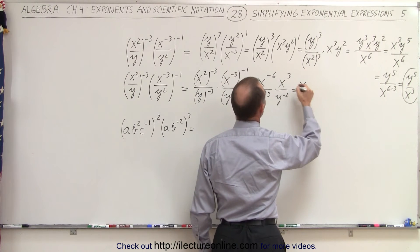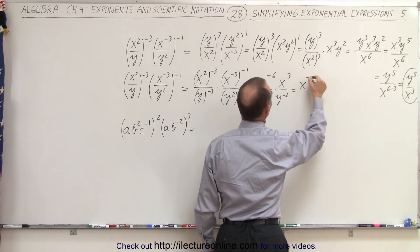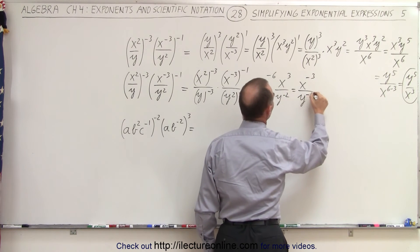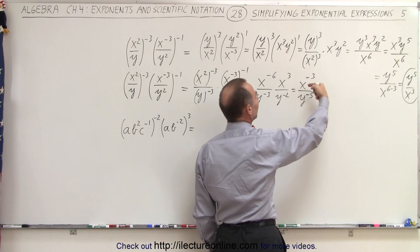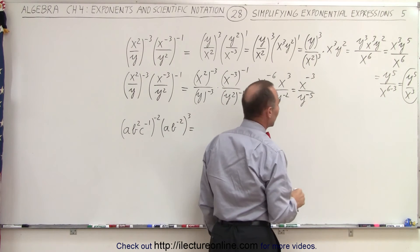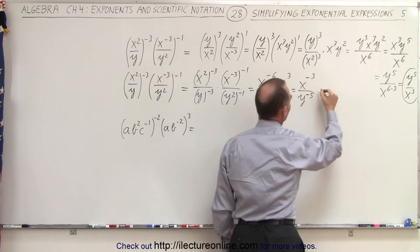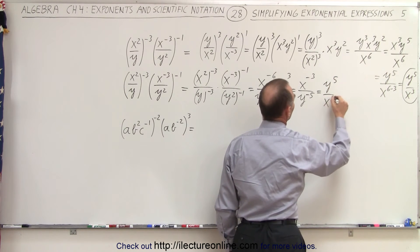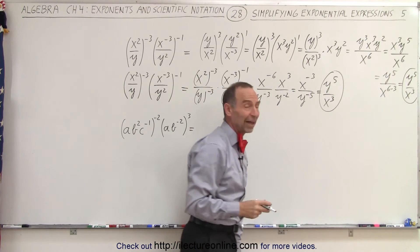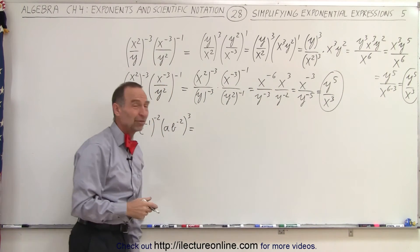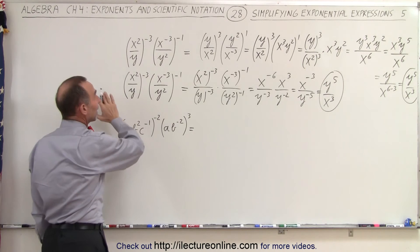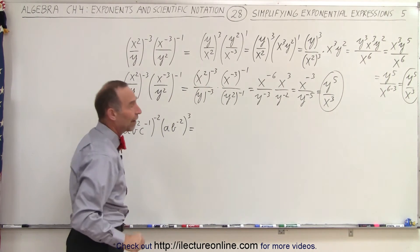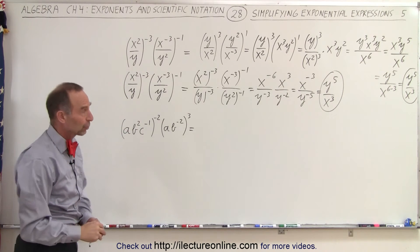So in the numerator, this becomes x to the minus 6 plus 3, which is minus 3. In the denominator, it becomes y to the minus 3 minus 2, which is minus 5. Then we simply flip the fraction, turning the negative exponents into positive exponents. So this becomes y to the fifth divided by x to the third. And notice it was faster and probably easier by simply going ahead and using the rules of exponents to simplify the expression, rather than first changing all the negative exponents. Sometimes it's quicker to do so.